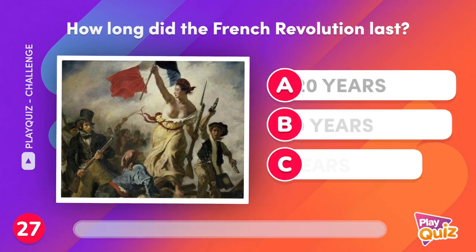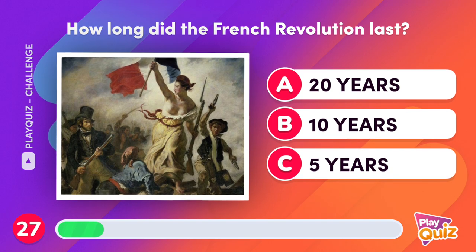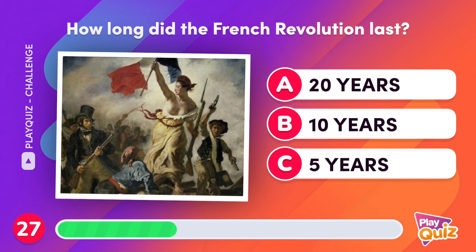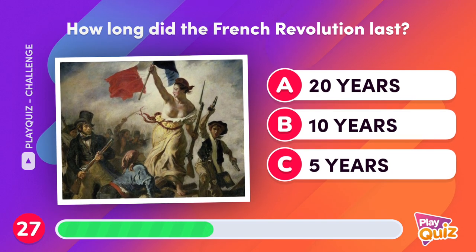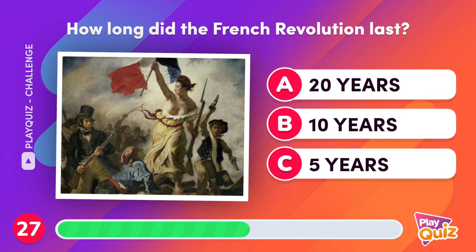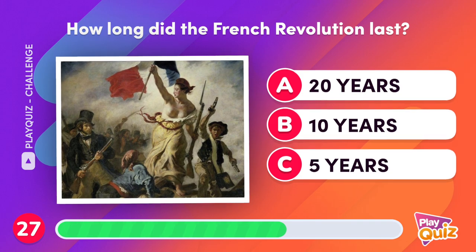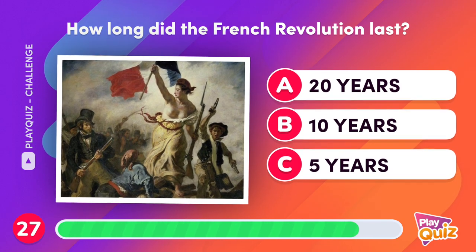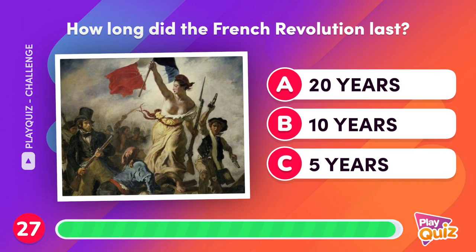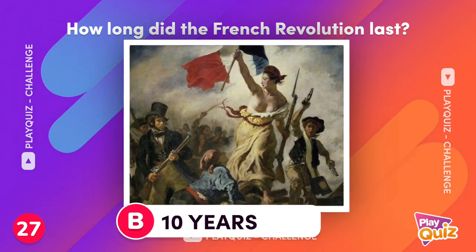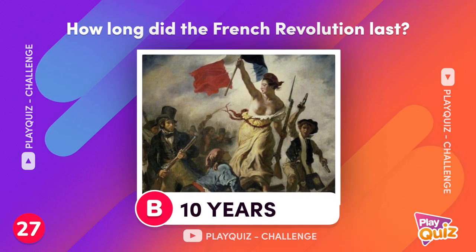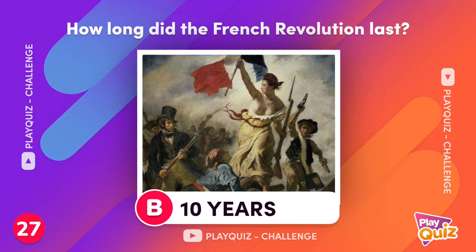How long did the French Revolution last? It lasted a little over 10 years, between 1789 and 1799.